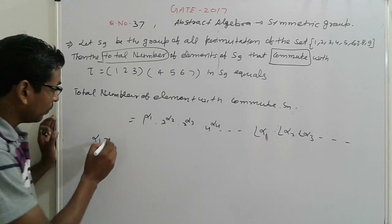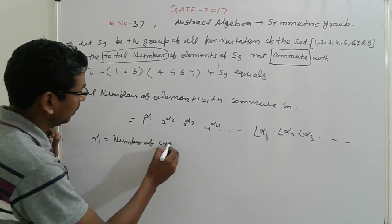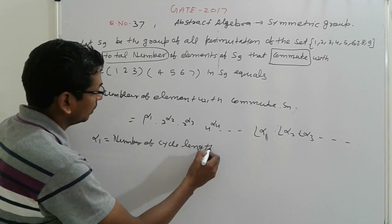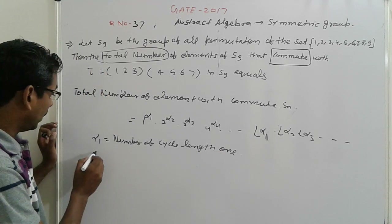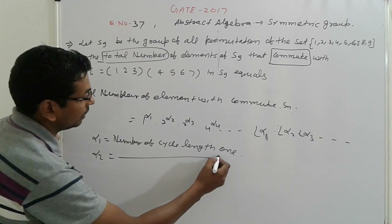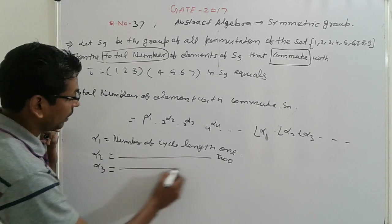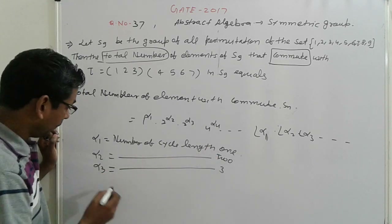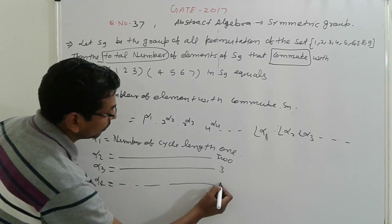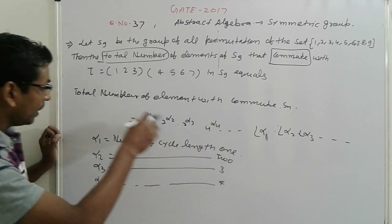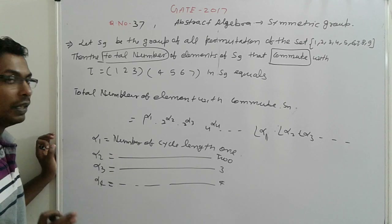Alpha-1 is the number of cycles of length 1, alpha-2 is the number of cycles of length 2, alpha-3 is the number of cycles of length 3, alpha-4 is the number of cycles of length 4, and so on. These are the cycle length counts represented by alpha-1, alpha-2, alpha-3, and so on.